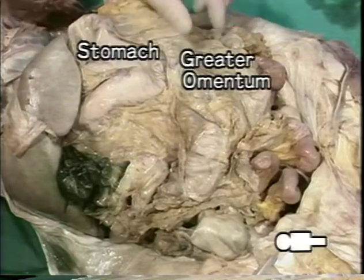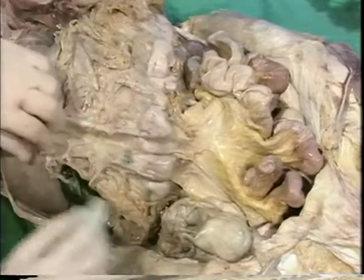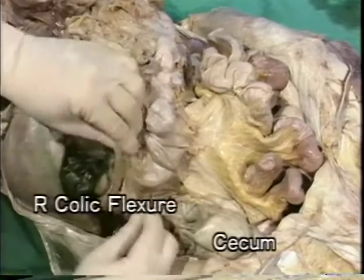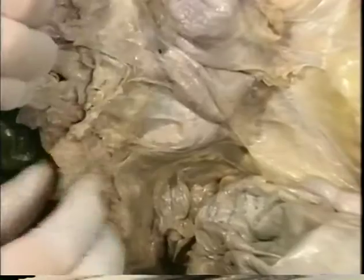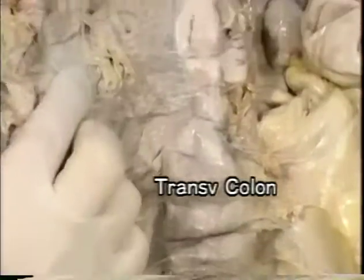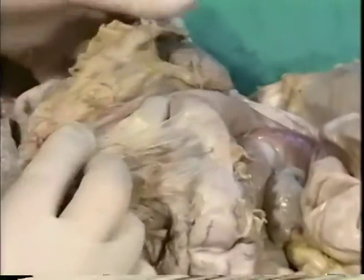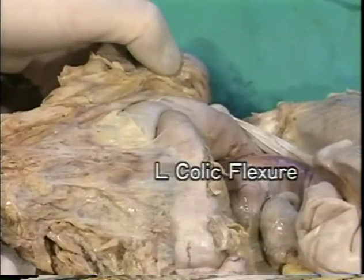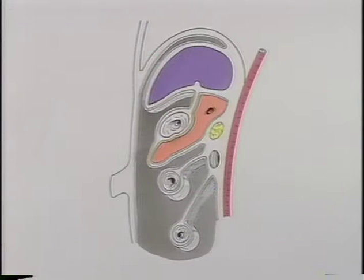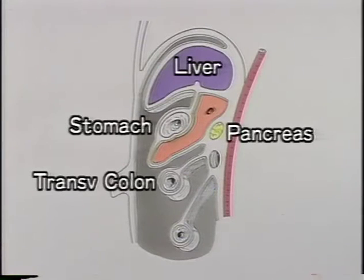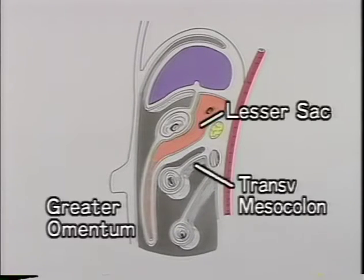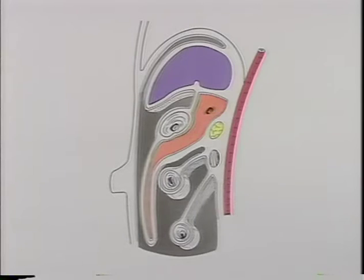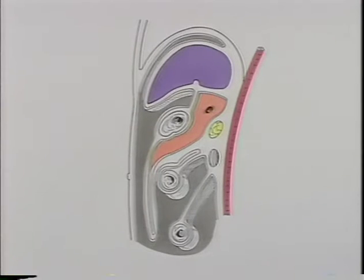Again from the right, we note that the greater omentum and transverse colon fuse from the right colic flexure to the left colic flexure. In this diagram of early development, the gray shaded area is the peritoneum. As the greater omentum develops, it is completely independent of the transverse mesocolon. Later, however, these two become joined by fusion fasciae, as seen here in blinking red.